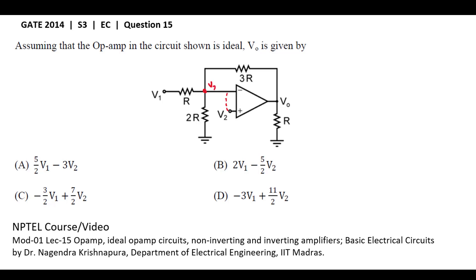In ideal op-amp, input draws no current, so in this direction current i equals 0. Apply KCL at this node.